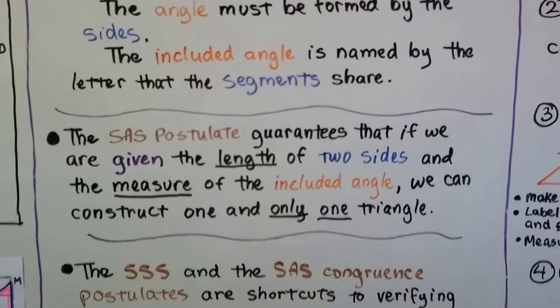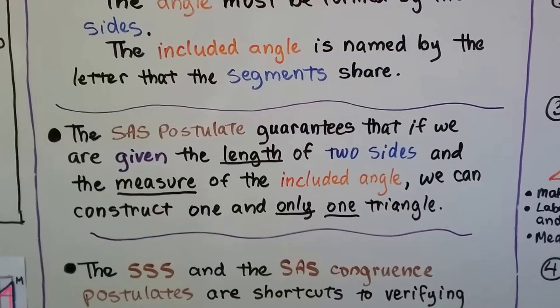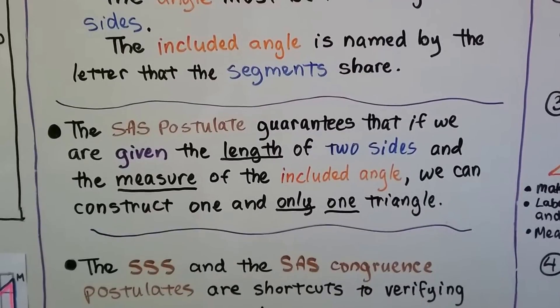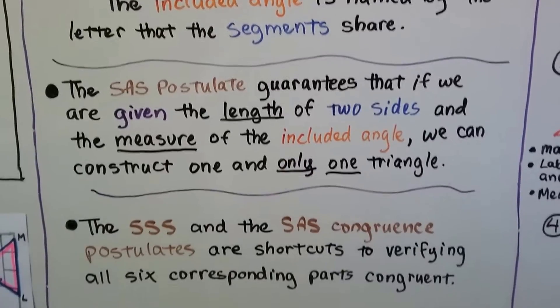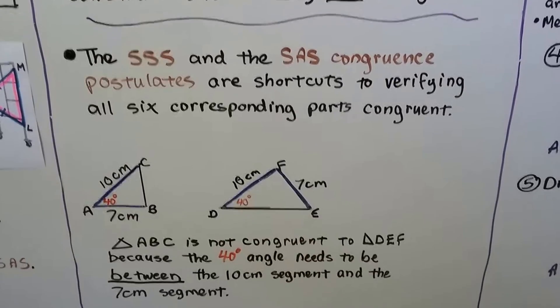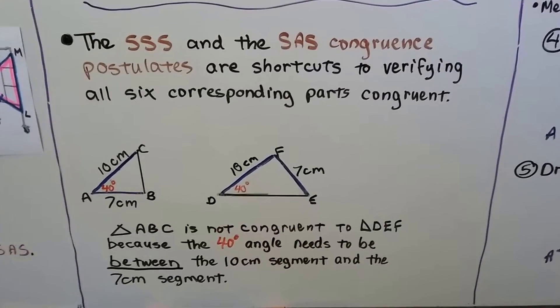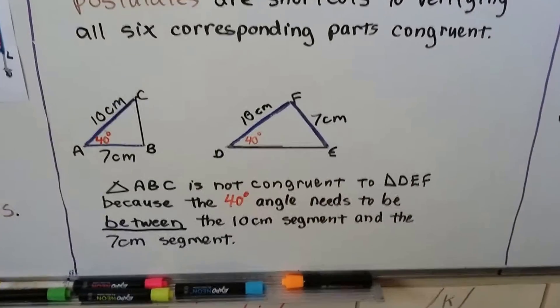The SAS postulate guarantees that if we are given the length of two sides and the measure of the included angle, we can construct one and only one triangle. The SSS and SAS congruence postulates are shortcuts to verifying all six corresponding parts congruent.